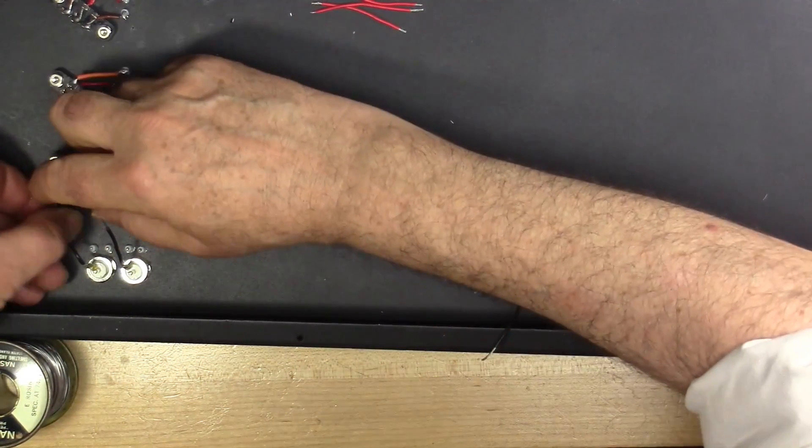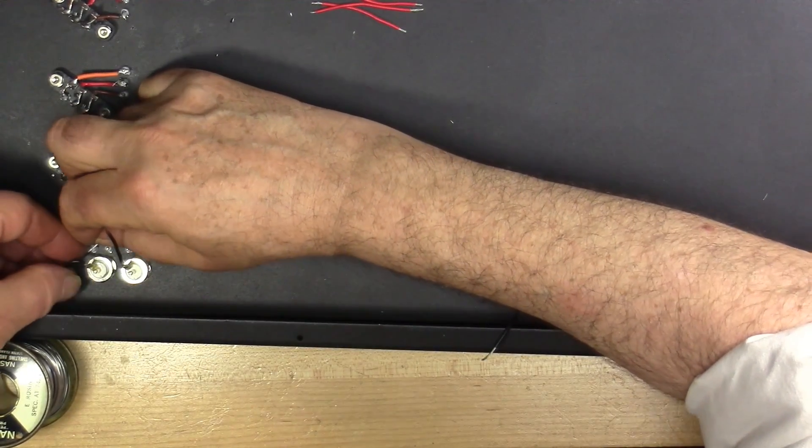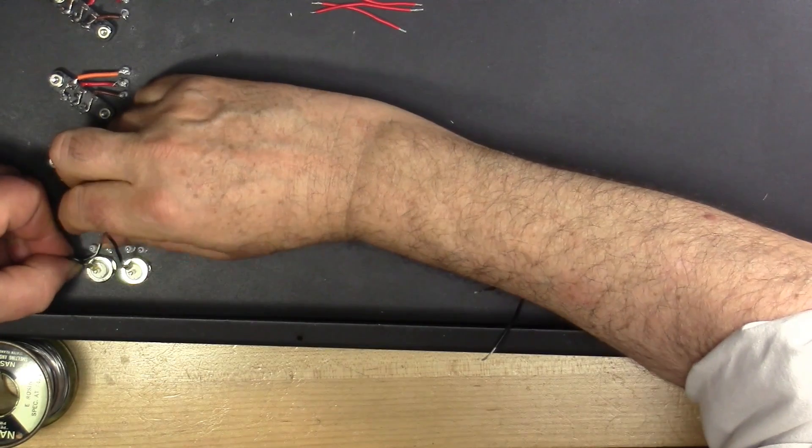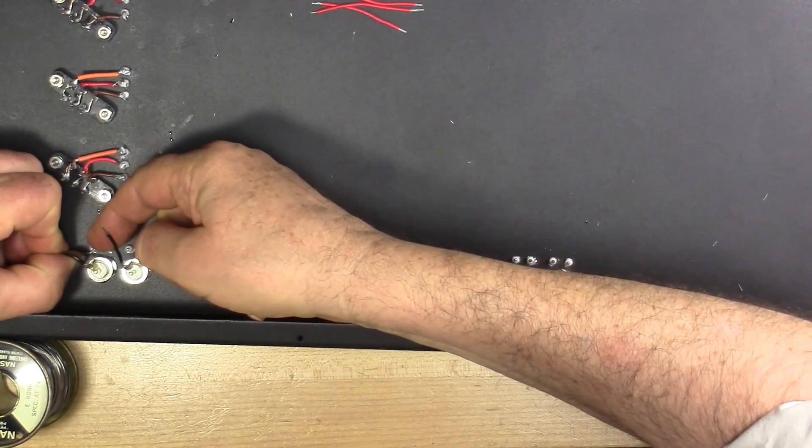Now I'm connecting these hookup wires to their corresponding feed through lugs. Once those are connected and crimped in place I'll begin soldering these things.